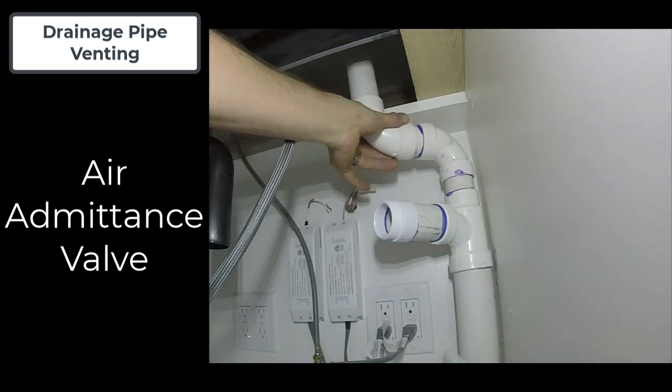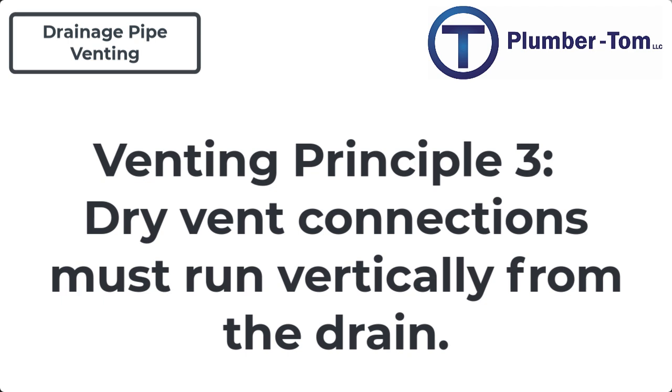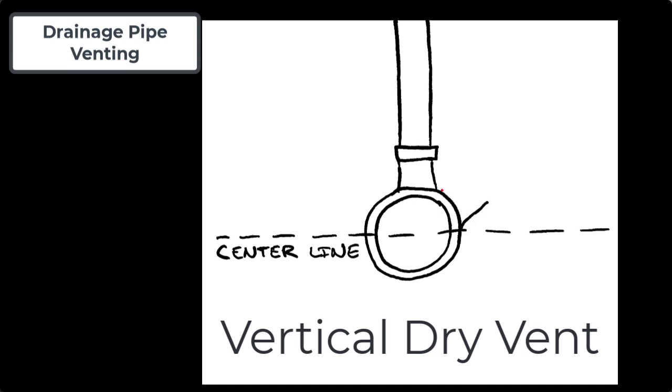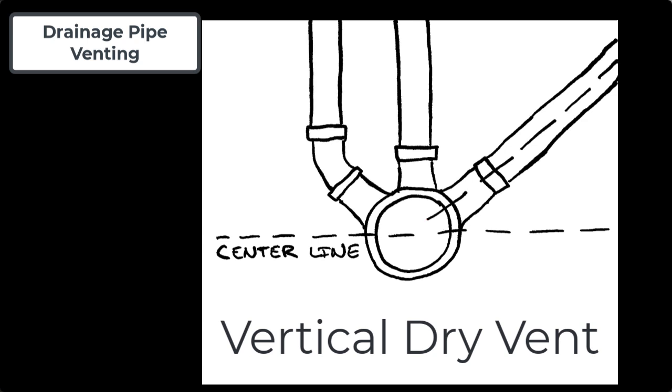Fundamental principle number three: dry vent connection must run vertically from the drain. A dry vent is referring to a pipe that is connected to a drainage system which will not receive any wastewater from a fixture. A vertical is considered a pipe coming off the top of a drain at any angle down to a 45 degree from the center line. This is to ensure that the vent will not become blocked by drainage over time.